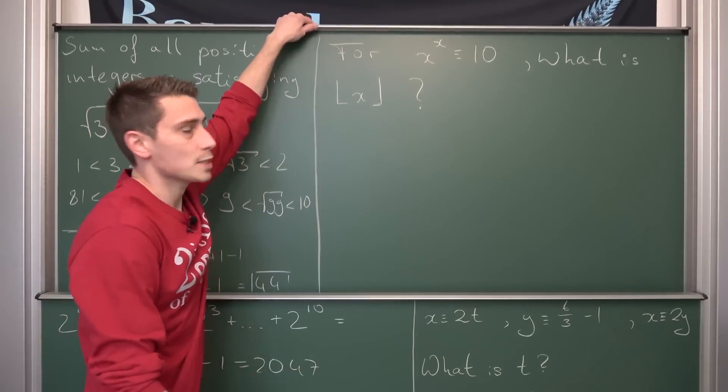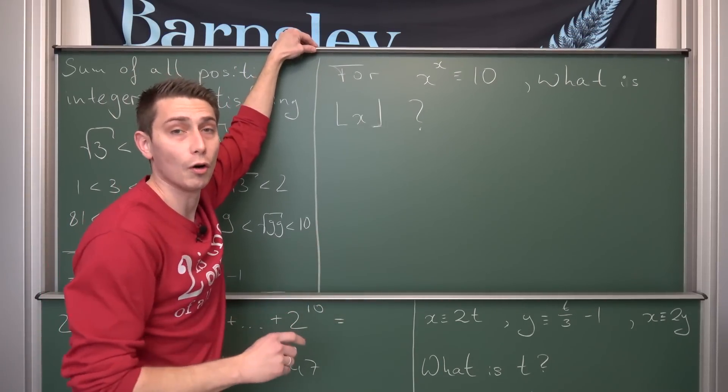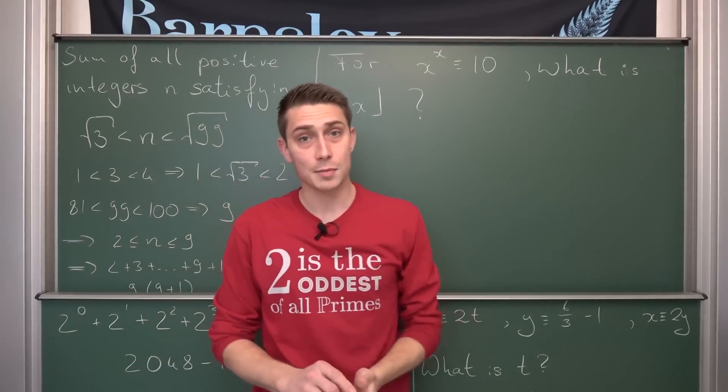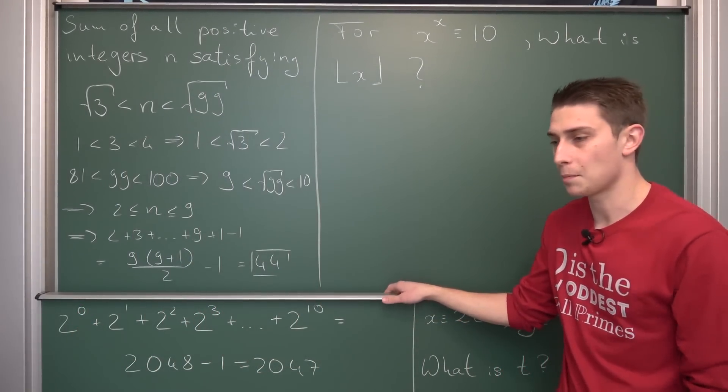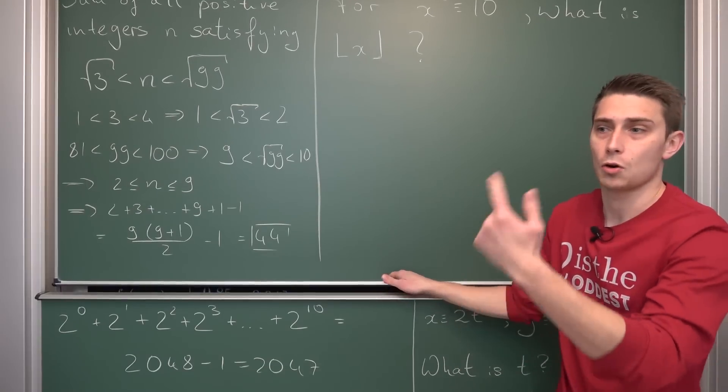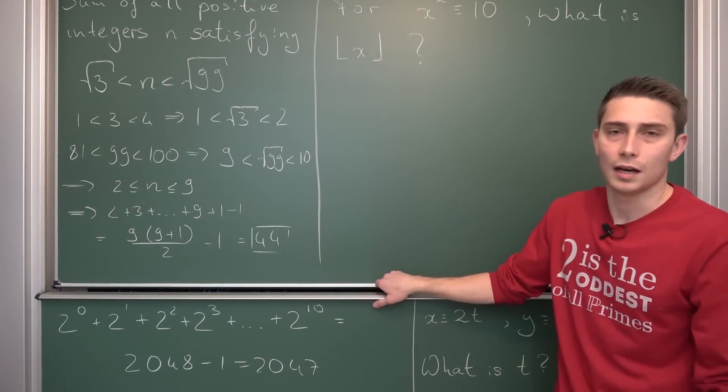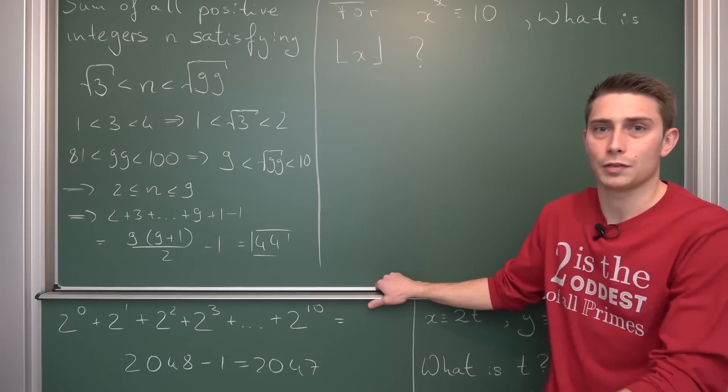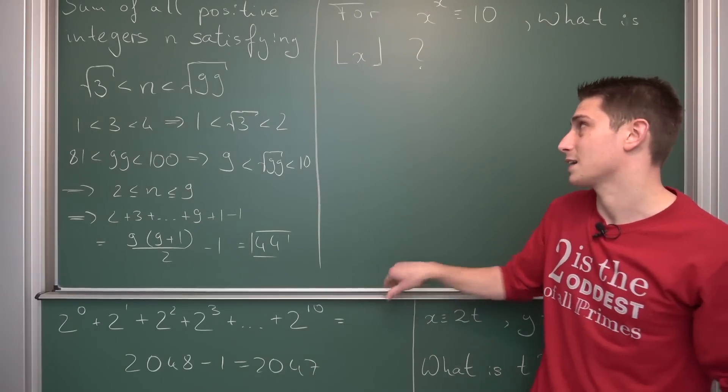Now the last problem. For x to the x power being equal to 10, what is the floor of x? Floor of x meaning it's like a rounding down function. So if we were to have for example 2.5, the floor of that is going to result in 2. But if we were to have the floor of 2.99, it's going to be 2 yet again.